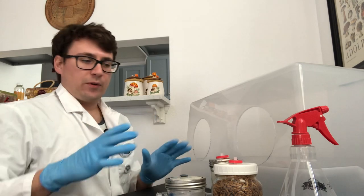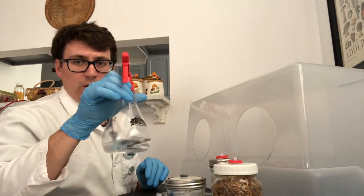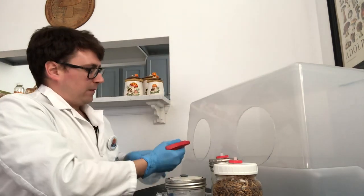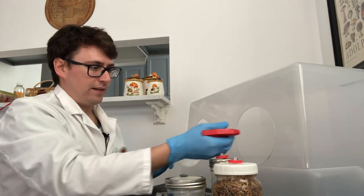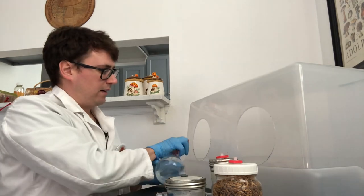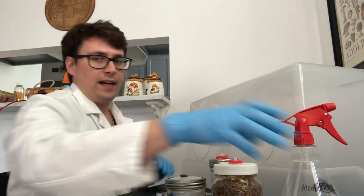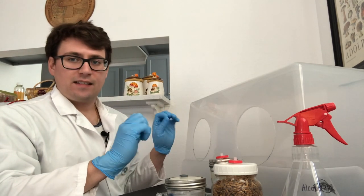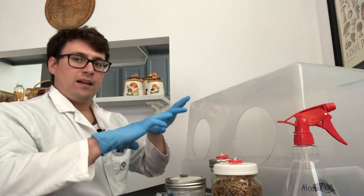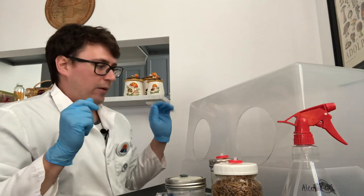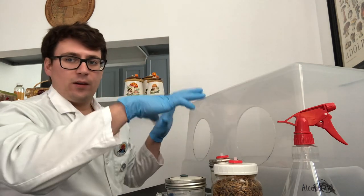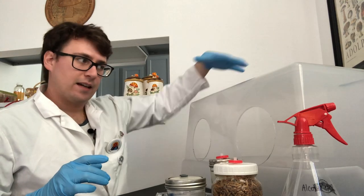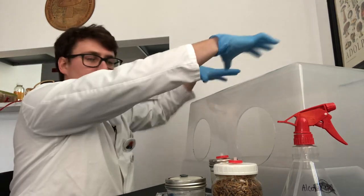One way to prevent this is to use isopropyl alcohol. I'll just spray my hands off and you want to spray off the inside of the still air box and let that alcohol evaporate. As it evaporates it's degrading the lipids and any bacteria and it will kill any living organisms on that surface. Right now it's disinfecting this cube of air space.